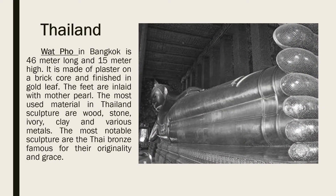While in Thailand, Wat Pho in Bangkok is 46 meters long and 15 meters in height. It is made of plaster on a brick core and finished in gold leaf. The feet are inlaid with mother of pearl. The most used materials in Thailand sculpture are wood, stone, ivory, clay, and various metals. The most notable sculptures are the Thai bronzes, famous for their originality and grace.